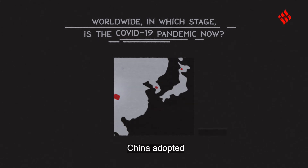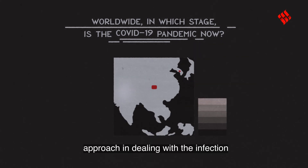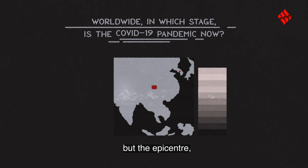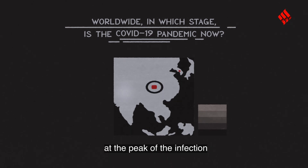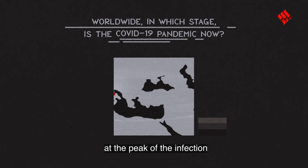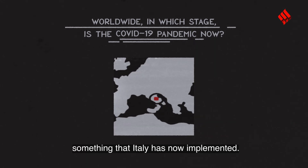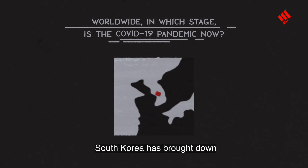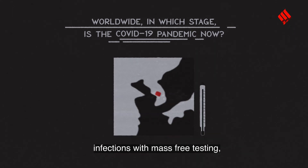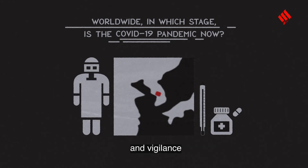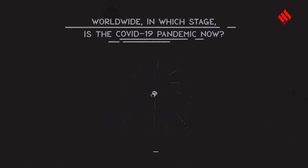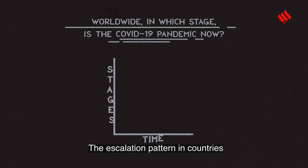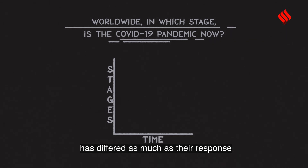China adopted a graded approach in dealing with the infection, but the epicenter, Hubei, was in a state of complete lockdown at the peak of the infection — something that Italy has now implemented. South Korea has brought down infections with mass free testing, treatment, and vigilance at borders and airports. The escalation pattern in countries has differed as much as their response.